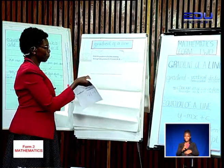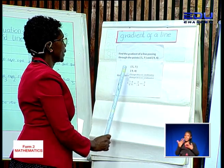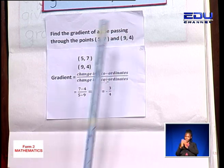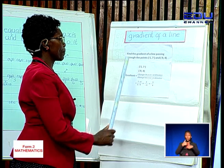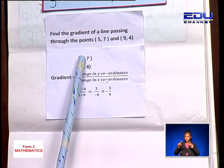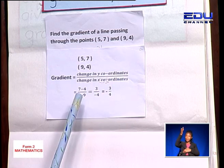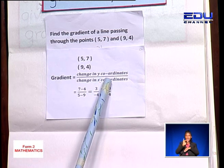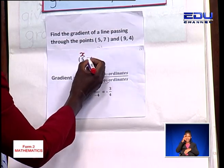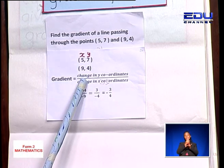This is how it is going to be worked out. We want to get the gradient of a line passing through the points (5, 7) and (9, 4). To make it easy, write the coordinate (5, 7) and write the coordinate (9, 4) below (5, 7). Then we work out the gradient, which is the change in y coordinates over the change in x coordinates. This is the x coordinate, and these ones are the y coordinates. To get the gradient, we take the y value 7 and subtract 4.